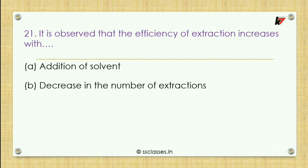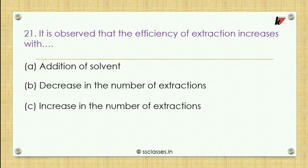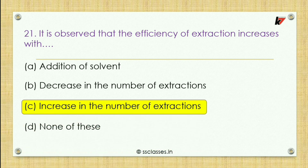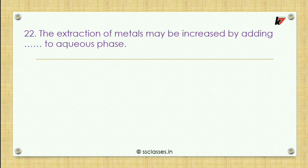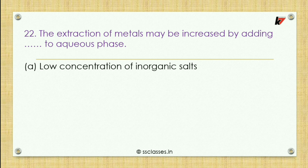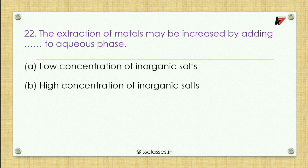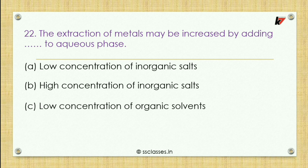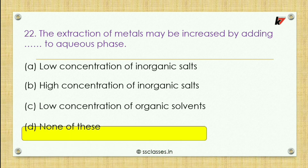Twenty-first question: efficiency of extraction increases with — addition of solvent, decrease in number of extractions, increase in number of extractions, or none of these. The correct answer is increase in number of extractions. Twenty-second question: extraction of metals may be increased by adding to the aqueous phase — options: low or high concentration of inorganic salts. The correct option is high concentration of inorganic salts.